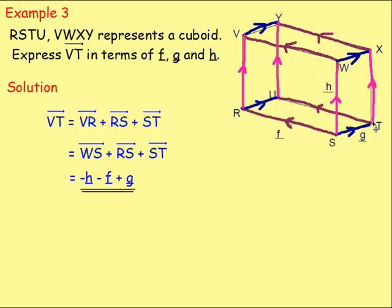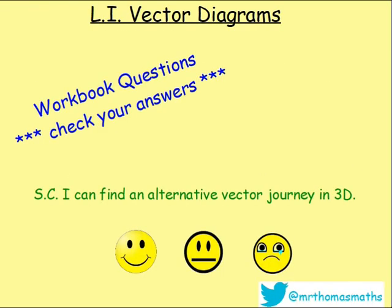Going from V to T: down to R is negative H, R to S is negative F because it's the opposite direction, and then S to T is just vector G. So that is how you do number three. Try some of these questions — they are in the workbooks. You're really finding alternative vector journeys in 3D. Good luck, enjoy, bye.